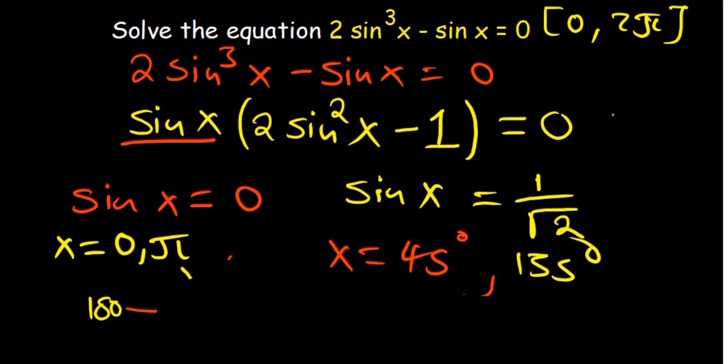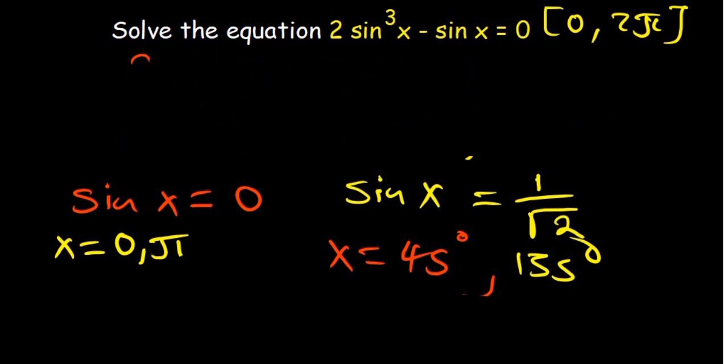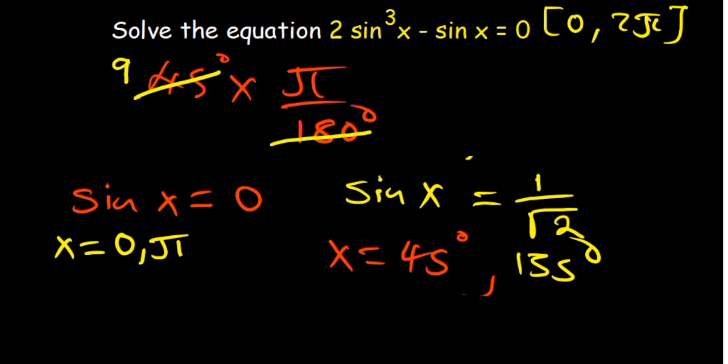So we need to convert our answers to radians because they want our answers to be between 0 and 2π radians. So all you just have to do is multiply that by π over 180 degrees. So you want to find the common factor between 180 and 45. All these are going to be divisible by 5. So 45 divided by 5 is 9, and 180 divided by 5 is 36.